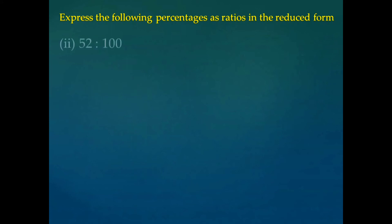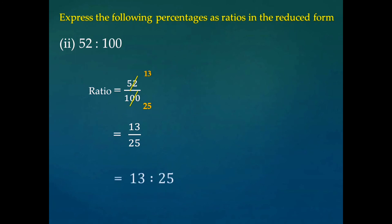Consider another problem with the same question: express the following percentage as a ratio in reduced form. The problem is 52 is to 100. The ratio will be 52 divided by 100. If we simplify these two by dividing both numbers by 4, we will get 13 divided by 25. That is, the reduced ratio will be 13 is to 25. This is the reduced form of 52 is to 100.